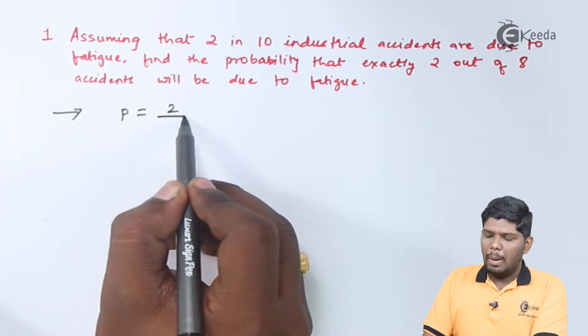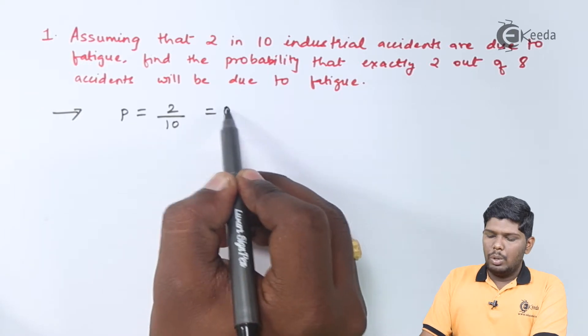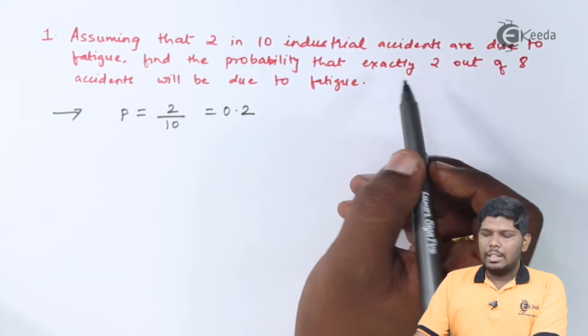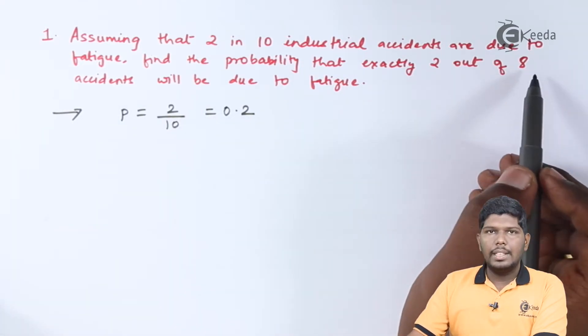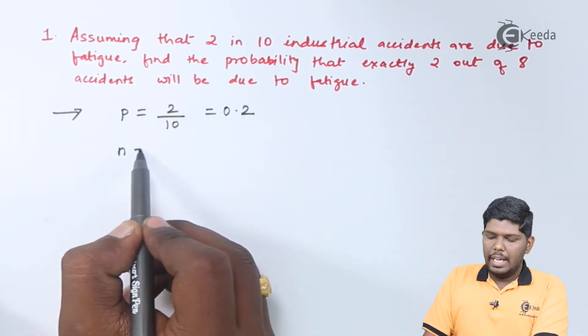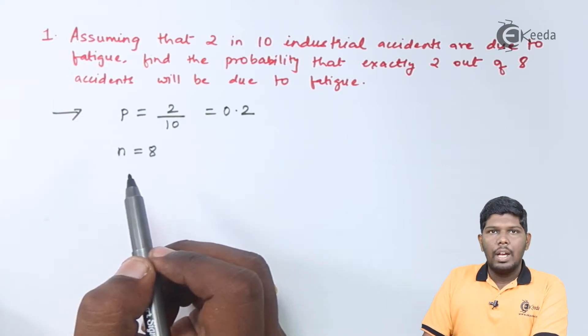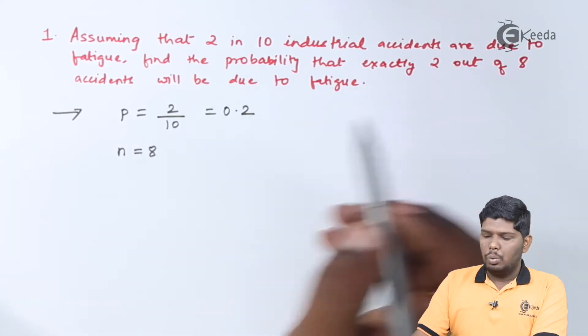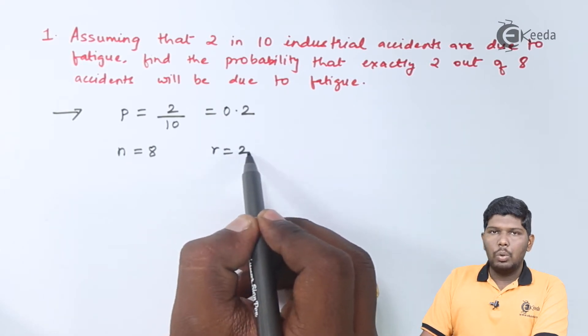After that, the number of accidents considered is 8, so the number of events n equals 8. The probability asked is for exactly 2, so the value of r equals 2.